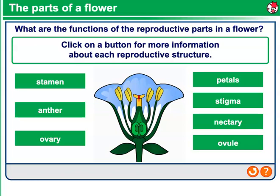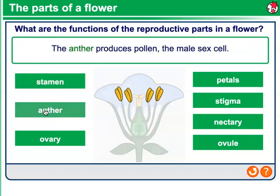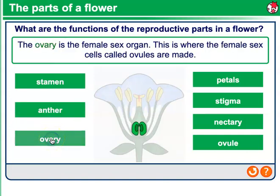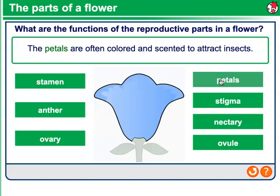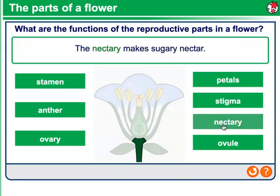What are the functions of the reproductive parts of a flower? The stamen is the male sex organ — it contains the anther. The anther produces pollen, which is the male sex cell. The ovary is the female sex organ, where the female sex cells called ovules are made. The petals are often colored and scented to attract insects, which help in the process of pollination. The stigma is the part of the female sex organ that receives the pollen. The nectary makes sugary nectar, and the ovule is the female sex cell.